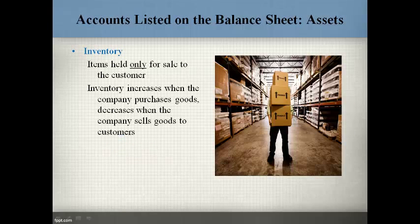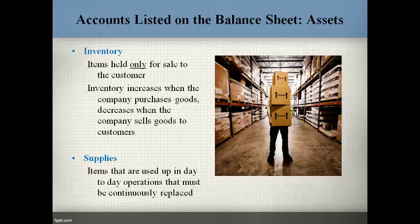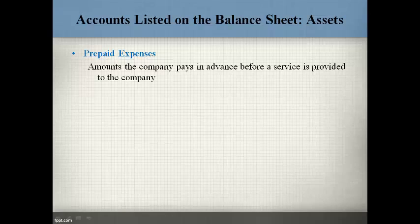Inventory consists of items that are held only to sell to customers. Inventory increases when the company purchases goods specifically to sell to customers and decreases when the company sells goods to customers. Supplies are items that are purchased to use in the day-to-day operations of the business and have to be continuously replaced. Prepaid expenses represent amounts the company pays in advance before a service is provided. The most common prepaid expenses are prepaid insurance, prepaid rent, and prepaid advertising.